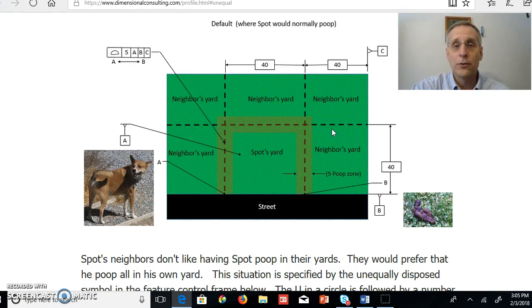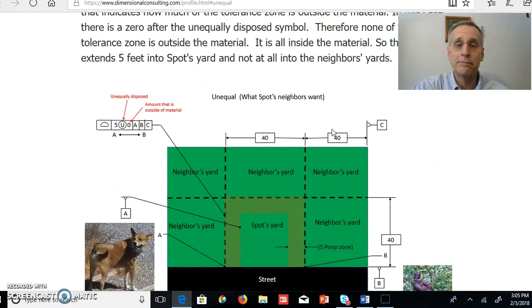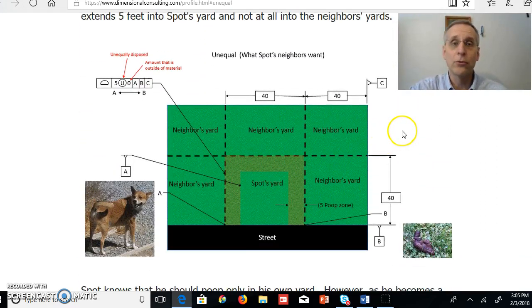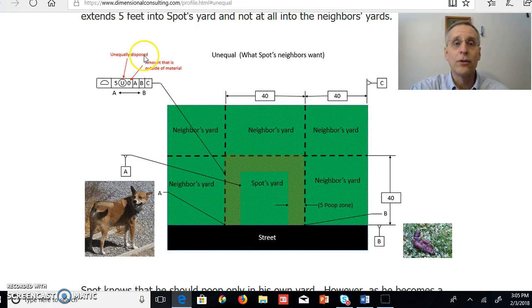That's if Spot is left up to his own devices. Now, what Spot's neighbors would like is to have Spot's poop zone defined by this tolerance zone, which is five wide, but we have the unequal symbol followed by a zero.